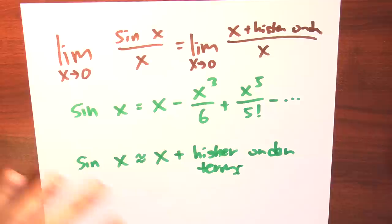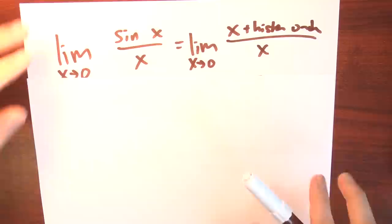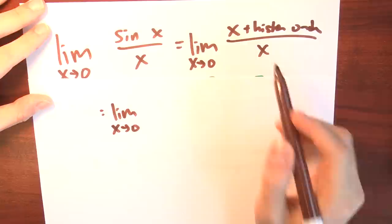That's the sort of limit that I could really approach. It's not a transcendental function anymore — it looks like a polynomial as far as I'm concerned. So I could think about how to calculate the limit as x approaches 0 of x plus higher order terms over x.